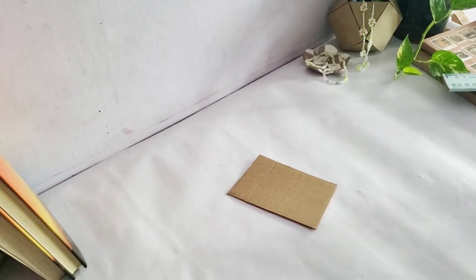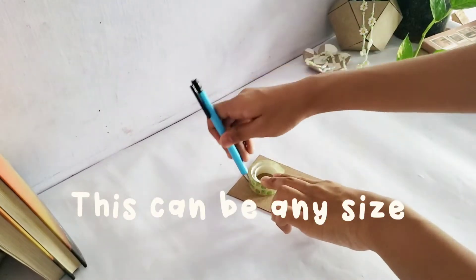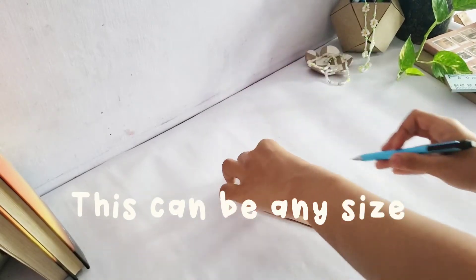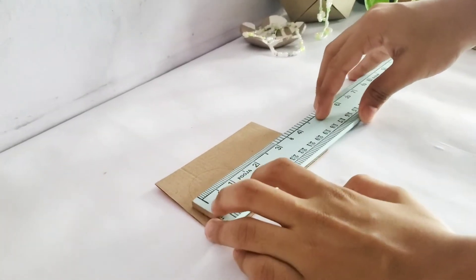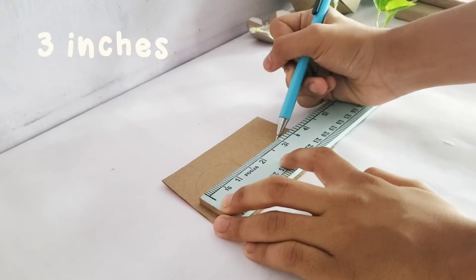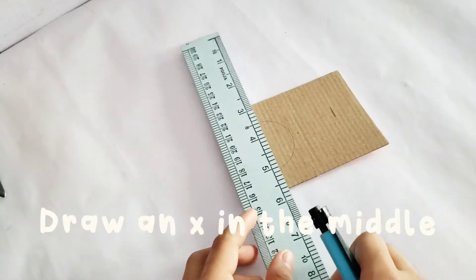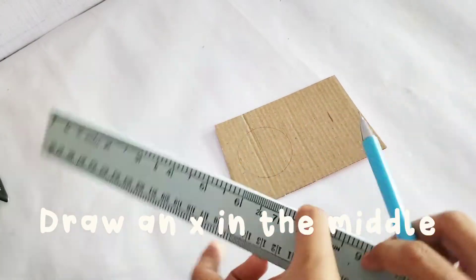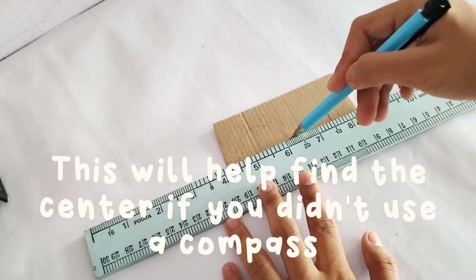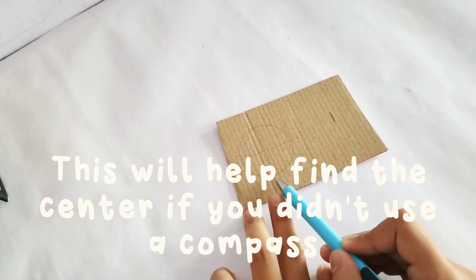First, draw a circle onto the cardboard. This tape ring that I'm using is about 4 cm in diameter. Now, from the edge of the circle, mark around 3 inches. To find the middle, if you didn't use a compass, just draw an X, and that will be your middle.